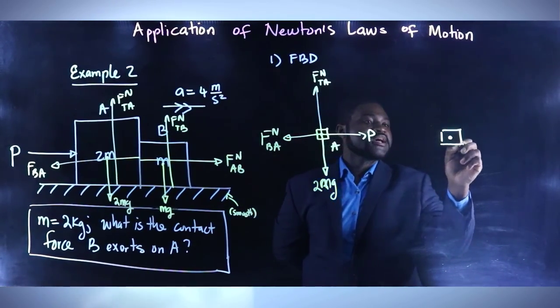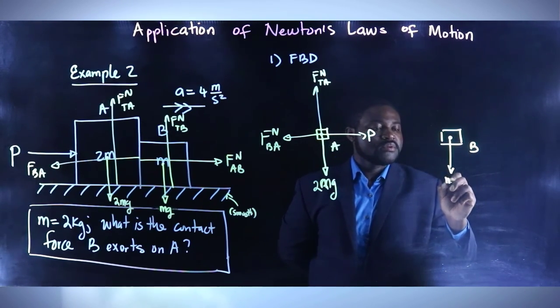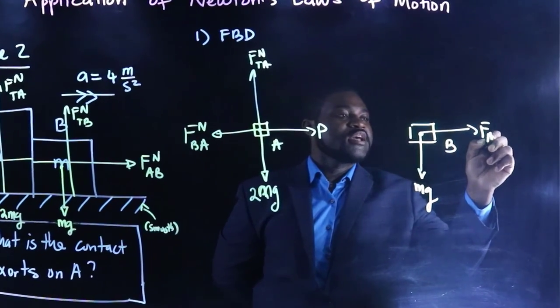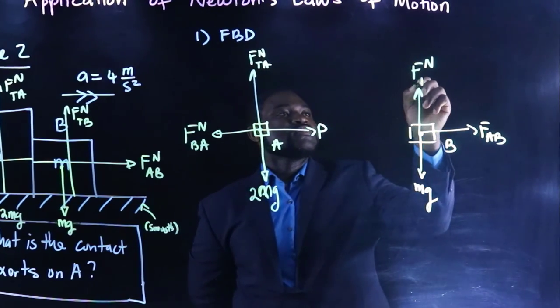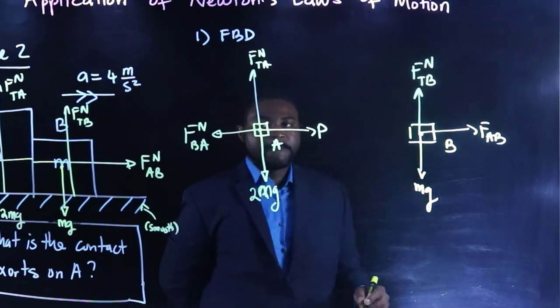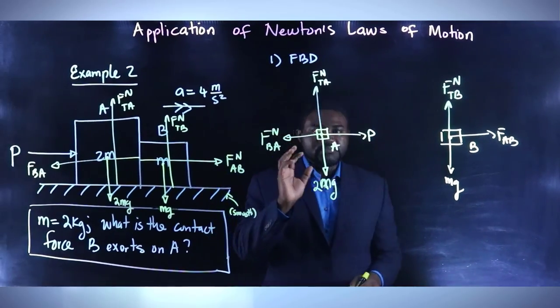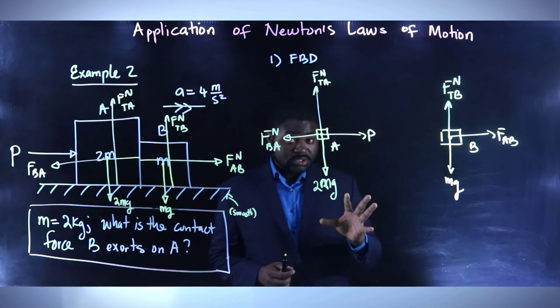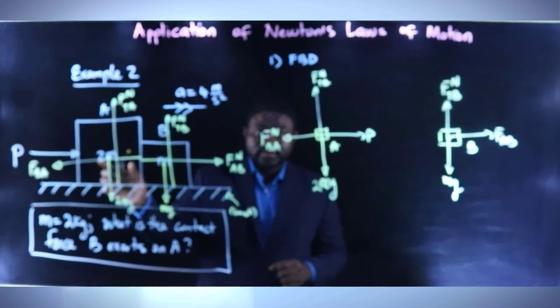So let's do the free body diagram for B. So this is going to be Mg, FAB, FN, table B. Now, when you draw your free body diagram correctly, you will notice automatically one thing. That the force P only interacts with A. It has nothing to do with B.